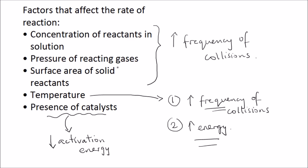So as long as we understand collision theory and what activation energy is, we can explain how each of these five factors affects the rate of reaction. The first three increase the frequency of collisions. Temperature affects both — it increases the frequency of collisions and it also increases the particles' energy. And catalysts reduce the activation energy needed, so that more collisions will result in a reaction. That was the factors affecting the rates of reaction, along with collision theory and activation energy.